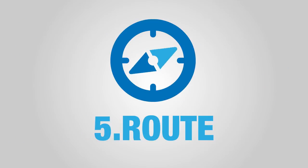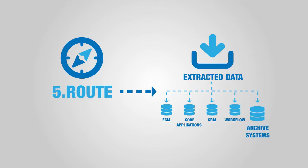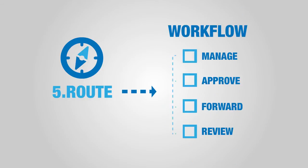Step 5: Route. eFlow DMR delivers images, meta tags, and extracted data to the ECM, core applications, CRM, workflow, archive, or other relevant enterprise systems.